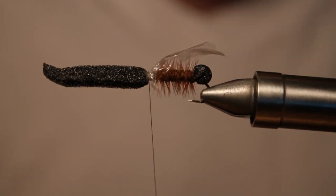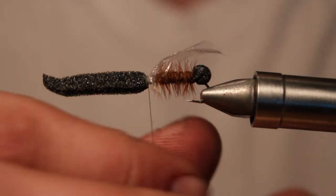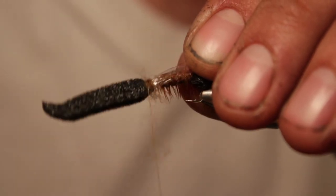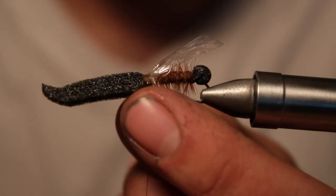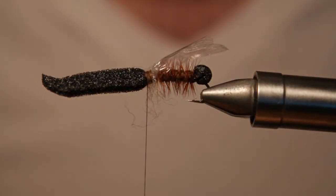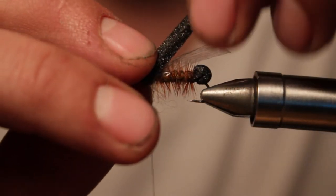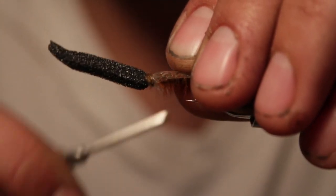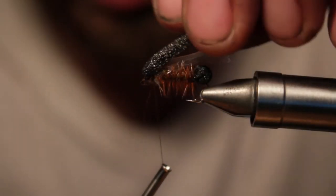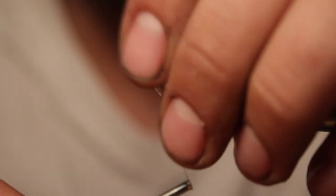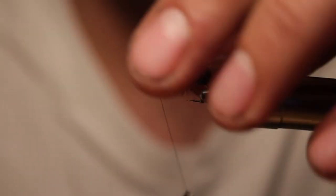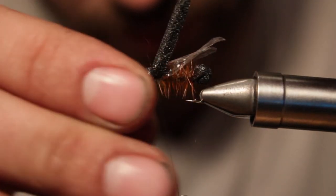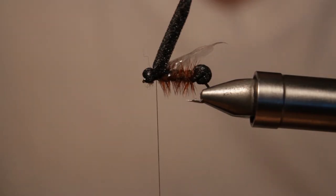Cut some of this excess off. And then once again, you can grab just a tiny bit of dubbing and throw it on there just to kind of cover up some of that ugly clear stuff there. At this point, you're going to actually fold your foam over, bring your thread back just a little bit, just however you want the head. And stoneflies have these tiny little heads, so it doesn't need to be big. And you're going to fold your foam over and create your head.